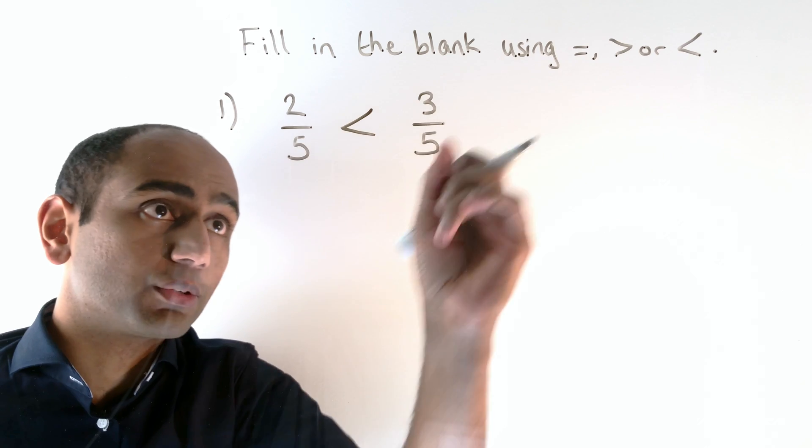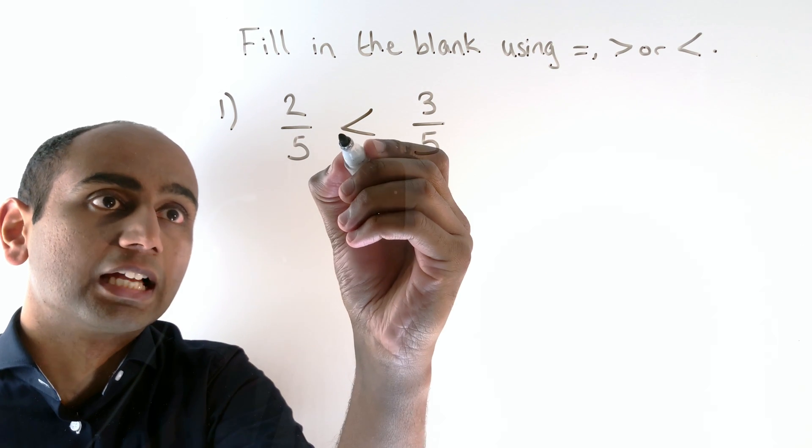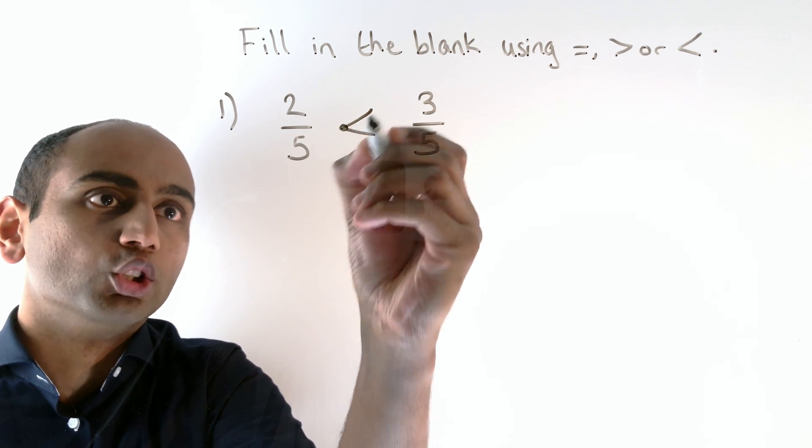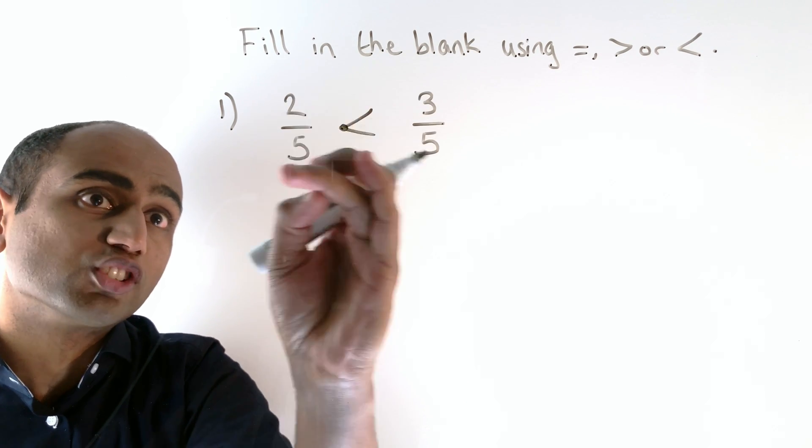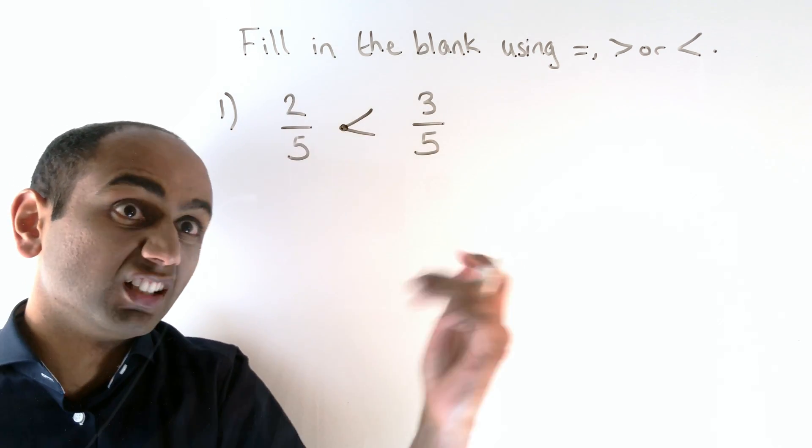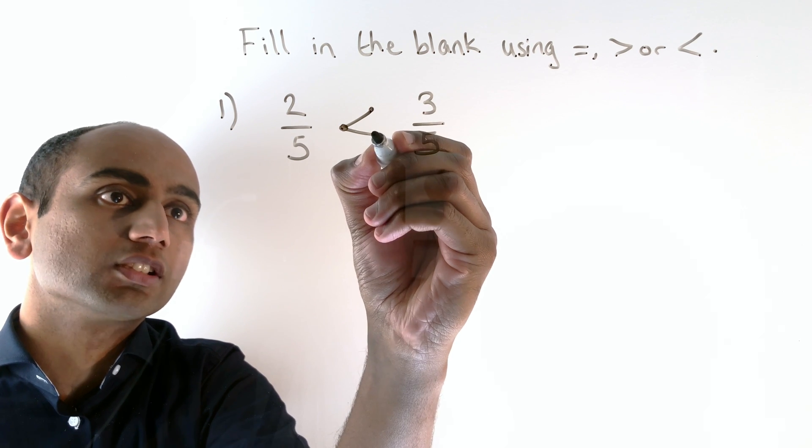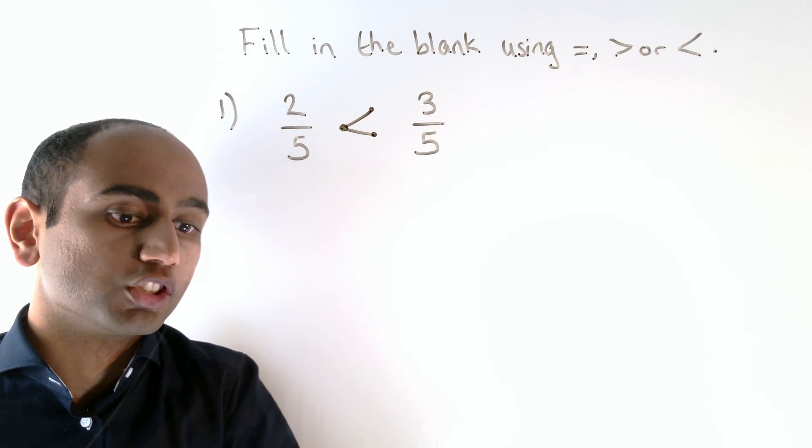One way of remembering which way round the sign goes is to look at the smaller end, effectively with just the one point. That goes towards the smaller number, and the larger end with the two points goes towards the larger number.